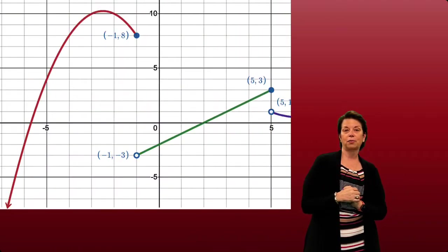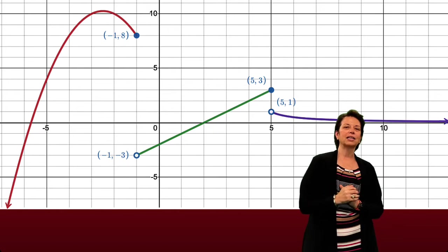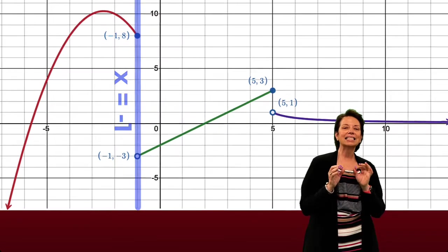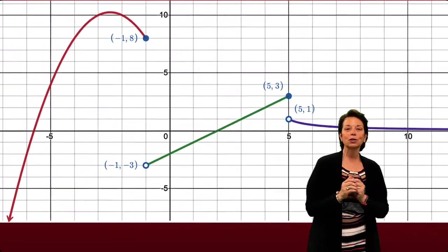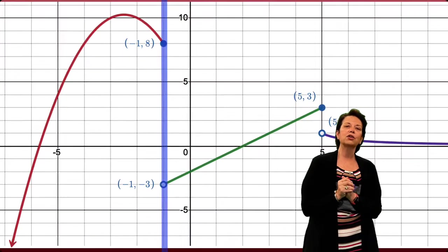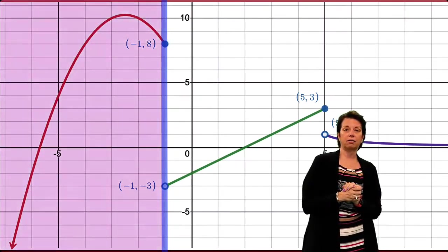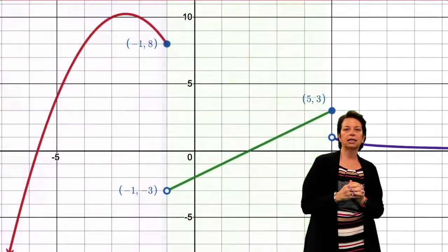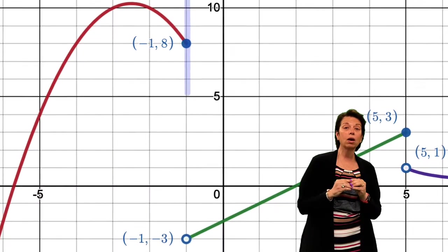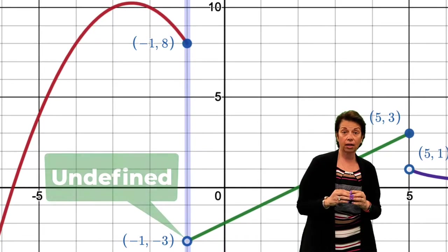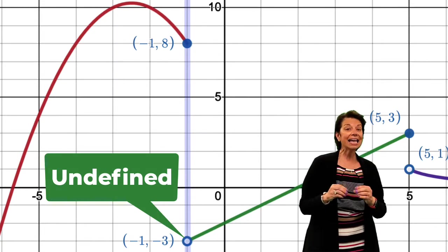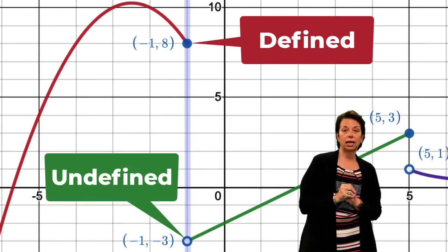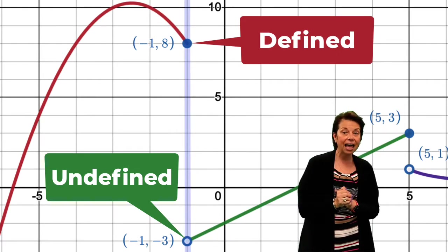So looking at the graph that we have here, I want you to really focus on what's happening around negative 1. We can see as x is getting closer and closer to negative 1, we have two pieces of the graph here, one on the left side of negative 1 and one on the right side. And even more interestingly, we have a situation where at negative 1 we have a place on the graph that is undefined with an open circle and a hole there, and another place that is actually filled in such that the value for x being negative 1 is actually defined at that location.